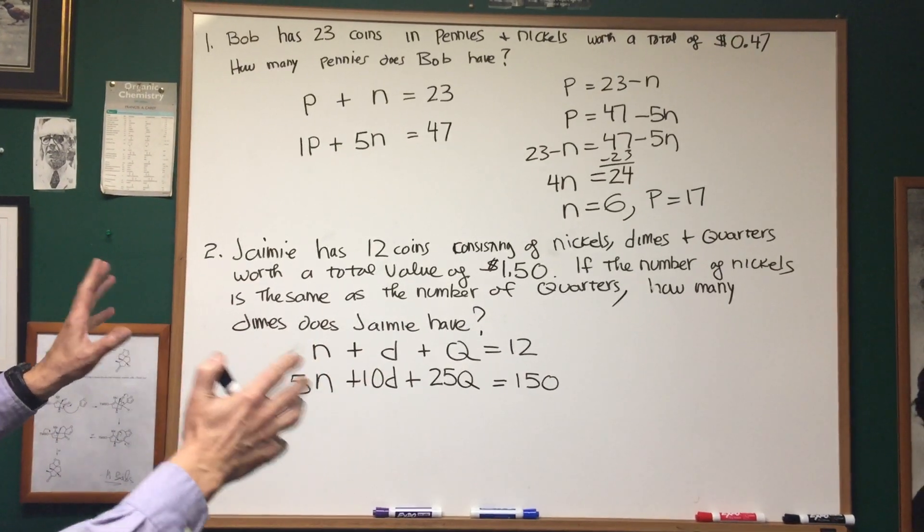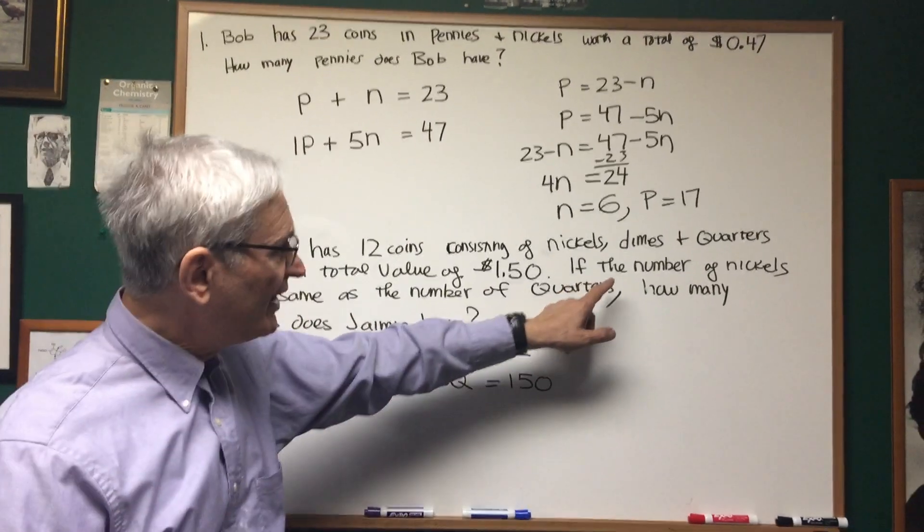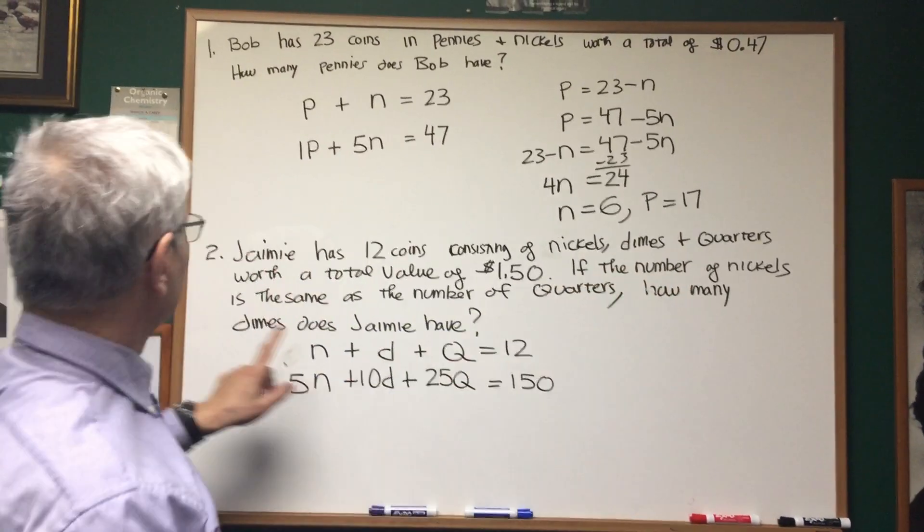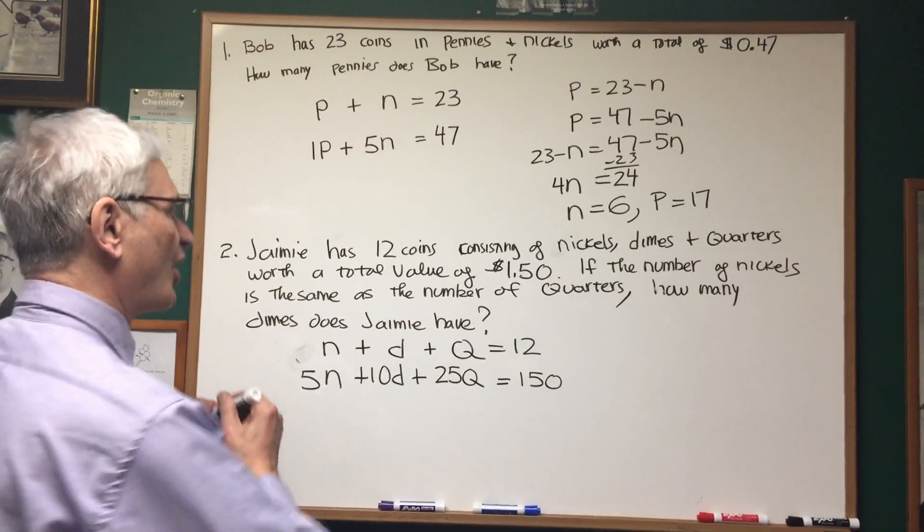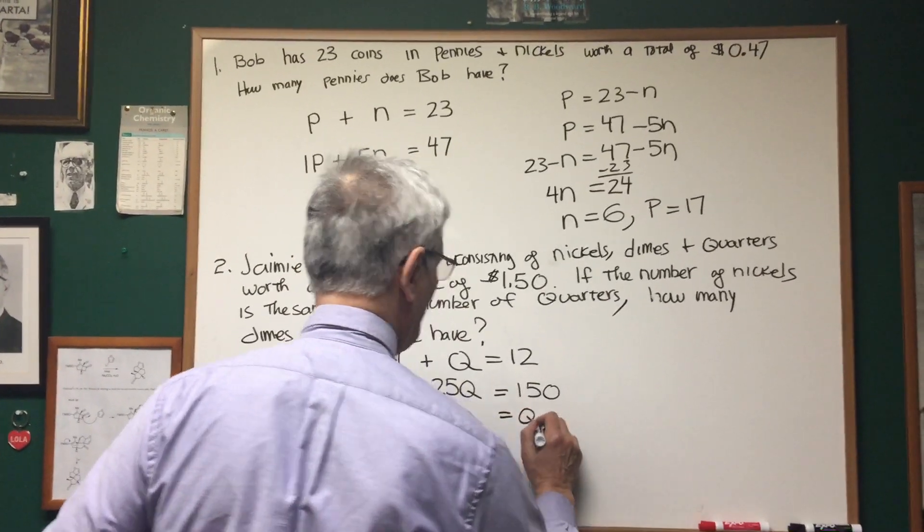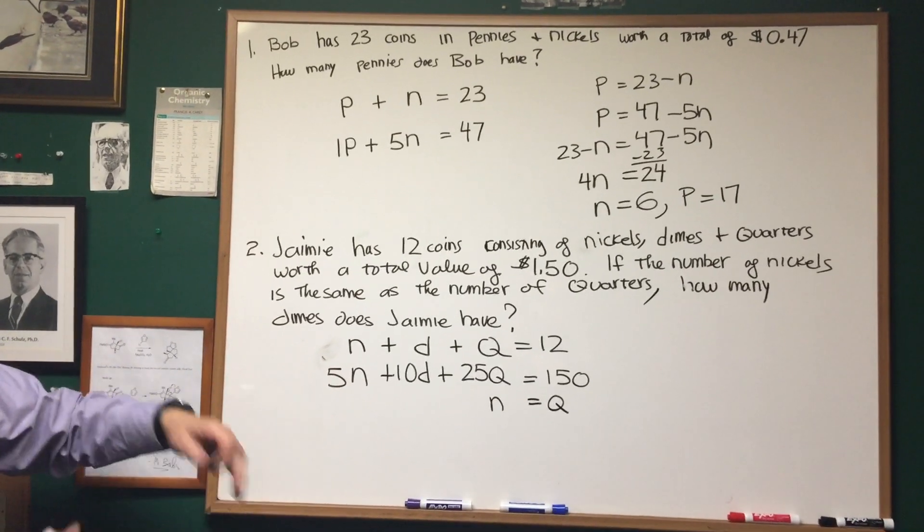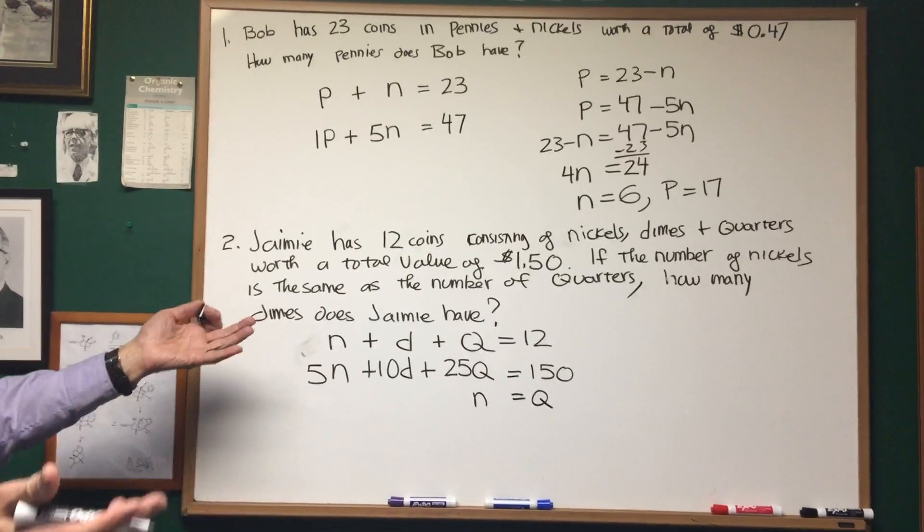So, we have to look in the problem to see if there's an opportunity to write a third equation. There has to be. Okay, here we are. The number of nickels is the same as the number of quarters. So, we have this. N is equal to Q. Bingo! There, here are our three independent equations, and we have three unknowns. Let's go and solve it.